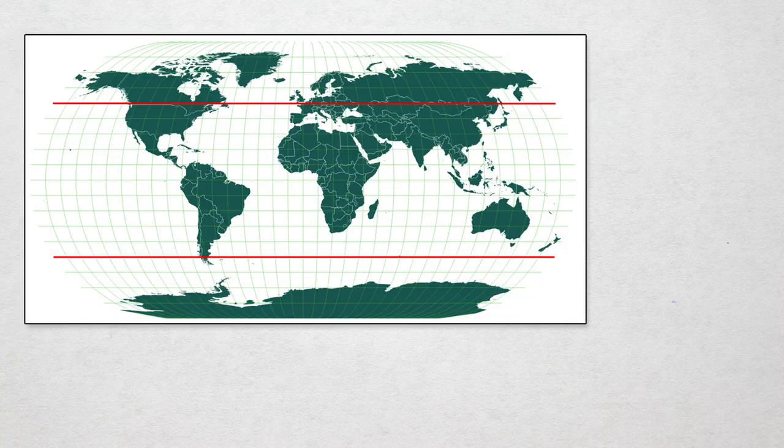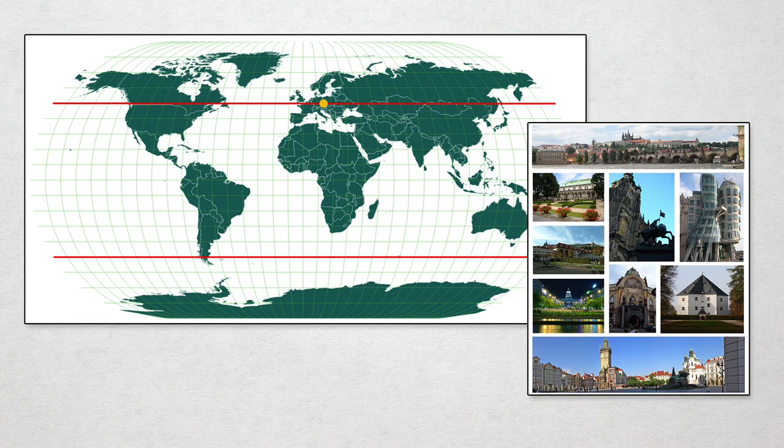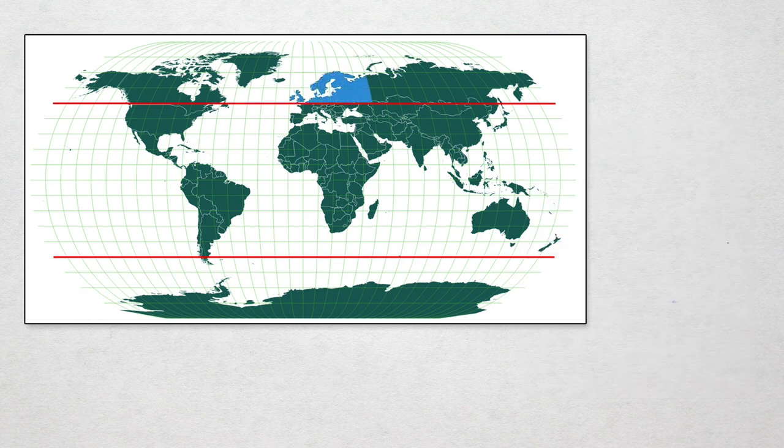Again, if this were Earth, you'd be able to experience the midnight sun in cities as far south as Prague, with most of northern Europe being within the Arctic Circle.